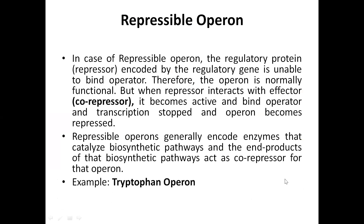Another type is the repressible operon, which is also an example of negative regulation. The repressible operon is always on in normal conditions — the genes are being transcribed. This is opposite to the inducible operon, where the operon is normally off and must be switched on by an inducer. In the repressible operon, when the genes are no longer required, the operon is switched off.